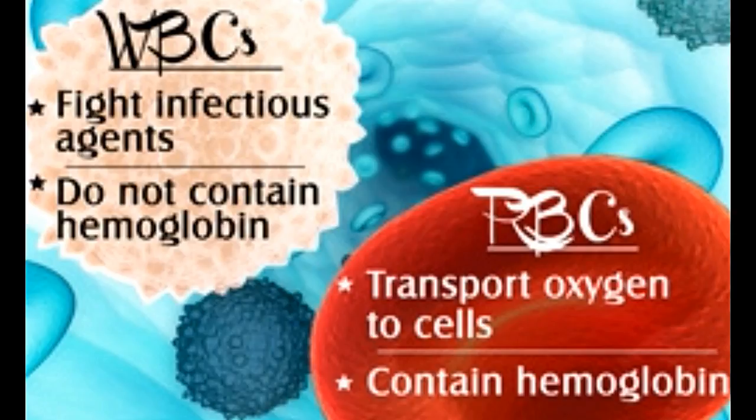White blood cells (WBCs) and red blood cells (RBCs) differ in various aspects, right from their structure and composition to their functions. All blood cells — RBCs, WBCs, and platelets — originate from the hematopoietic stem cells present in our blood, bone marrow, and the umbilical cords of newborn babies. On average, a human adult contains about 5 liters of blood, mainly composed of plasma and blood cells.